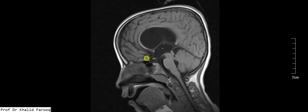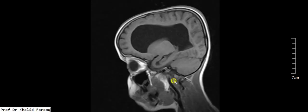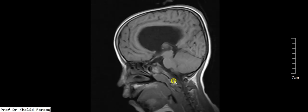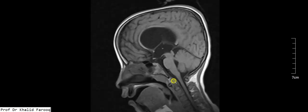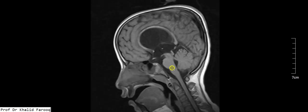The lateral ventricle is also dilated, so this obstructive hydrocephalus is because of stenosis in the lower portion of the cerebral aqueduct. In this case, CSF flow would be through the floor of the third ventricle into the interpeduncular and prepontine system.